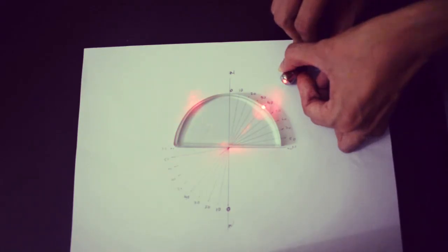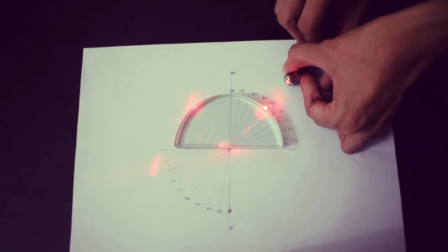If I carefully observe at which angle this reflection is happening, I notice it is somewhere around 40 degrees. This is called the critical angle — the minimum angle that light has to make so that total internal reflection occurs.